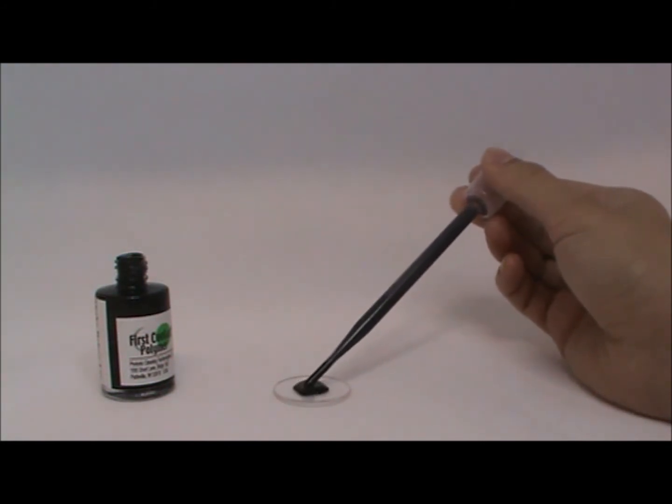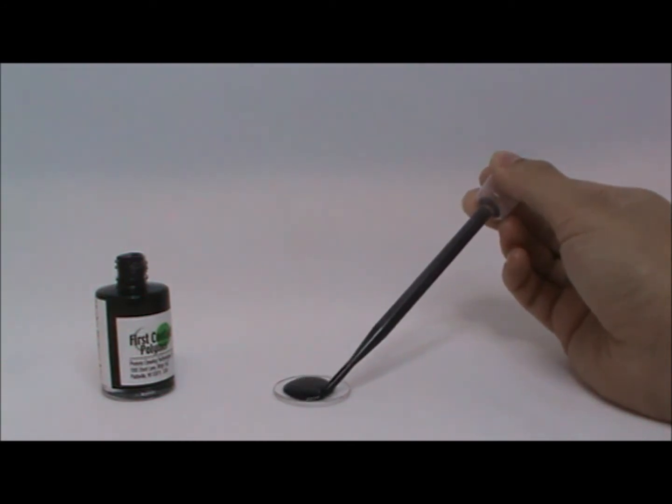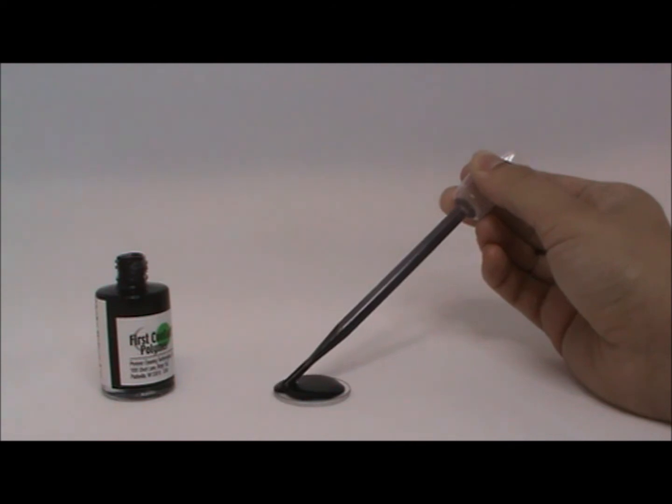Sometimes bubbles form in the drying polymer, an artifact of the additive and manufacturing process. If the bubbles don't allow for a continuous black film, apply a second coat to the substrate.